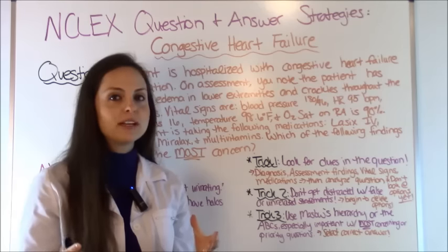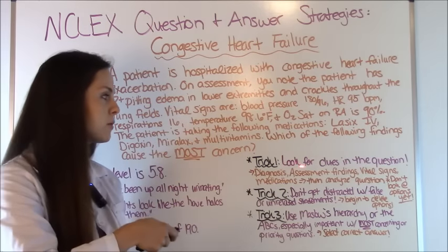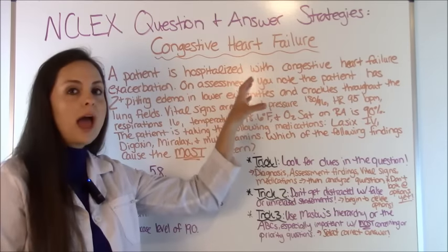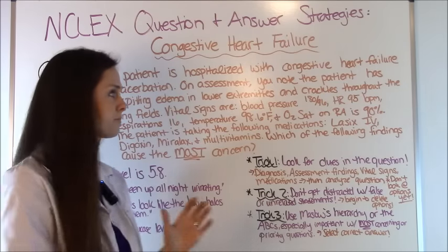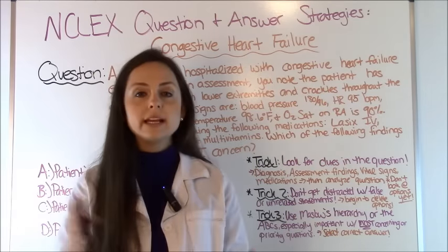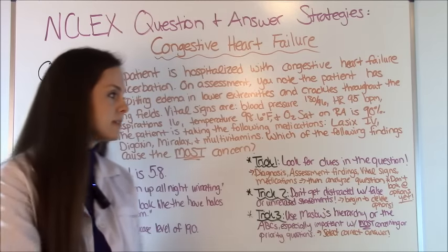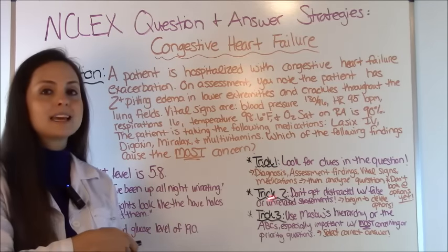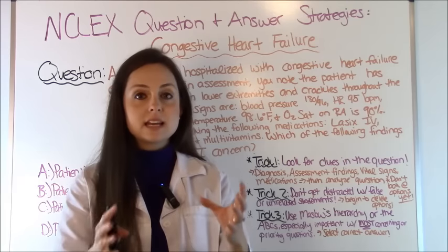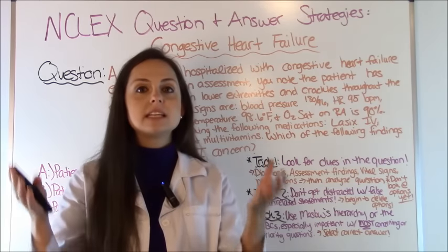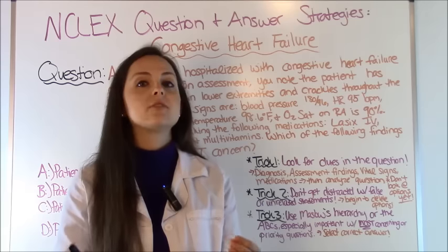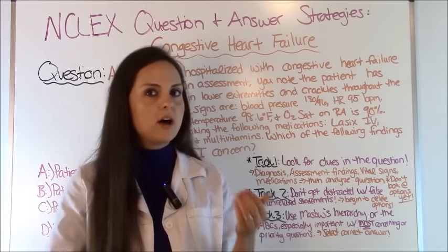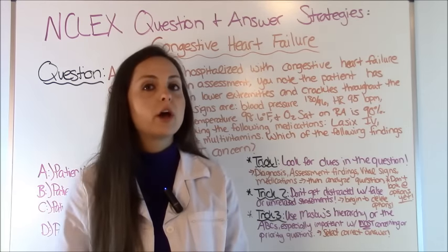After you read the question, you want to do trick number one: look for clues in the question that will help you answer the options. Don't look at the options yet. While reading the question, look for the following things if given: a diagnosis, the assessment findings, vital signs, and medications. Any of this information in an NCLEX question should be sending off red flags, because you need to look at it critically and ask yourself why they put it in there — is it a clue to help me understand what's truly going on with the patient?